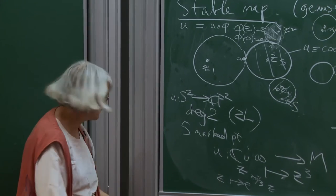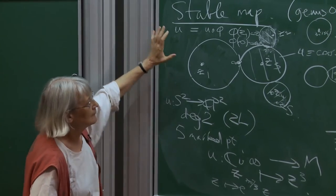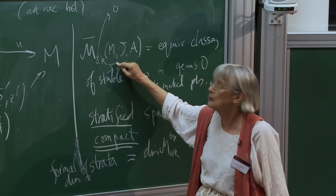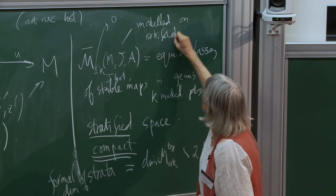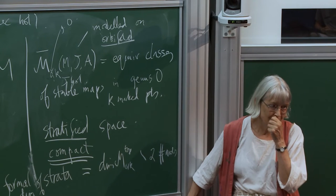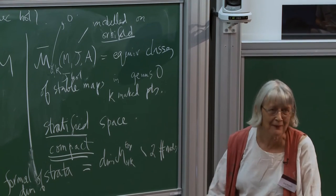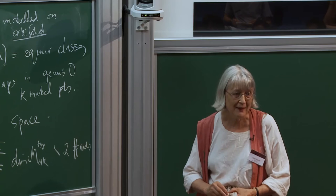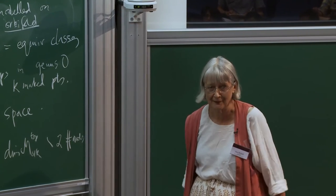The stability condition is equivalent to saying the group of automorphisms of the stable map is finite — a very important condition. The strata are typically orbifolds rather than manifolds because of automorphisms, but with finite isotropy groups. Regarding the topology on M̄_{0,k}: it's called the Gromov topology. Each stratum has a clear topology. For each node there's a line bundle of gluing parameters, and there's a map that resolves it — giving the topology. Stable maps should also have finite energy, which is guaranteed by being in class A, since ω(A) is a fixed number.